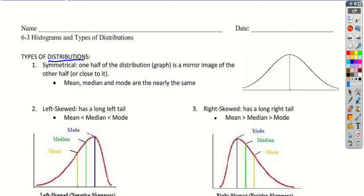There are two different types. The first one is a symmetrical distribution, and that kind of looks like a nice hill, right down the middle, where one side of it is the same as the other side, or pretty close to it. So it kind of just looks like a nice rounded hill, and you can almost cut it in half down the line.